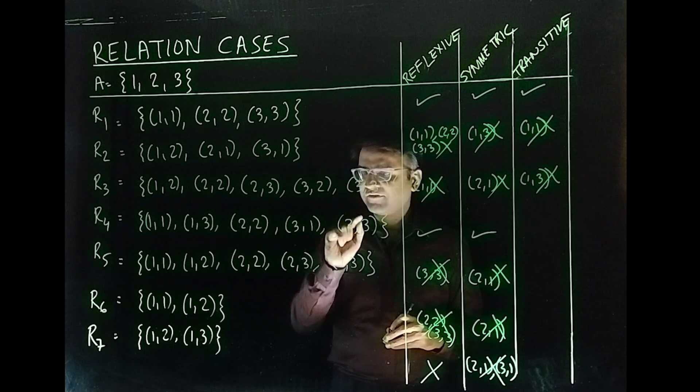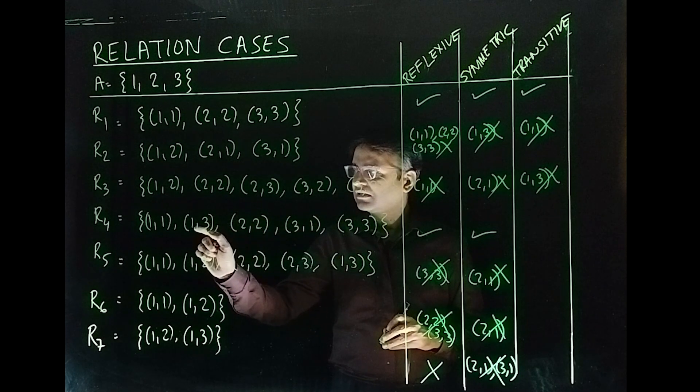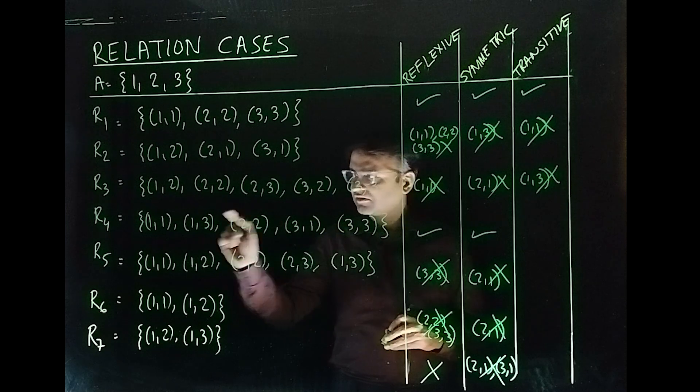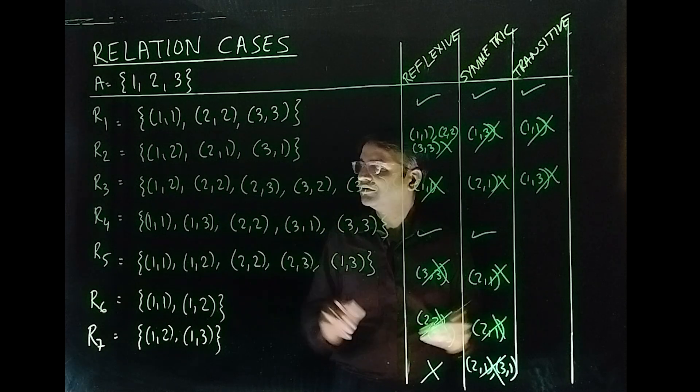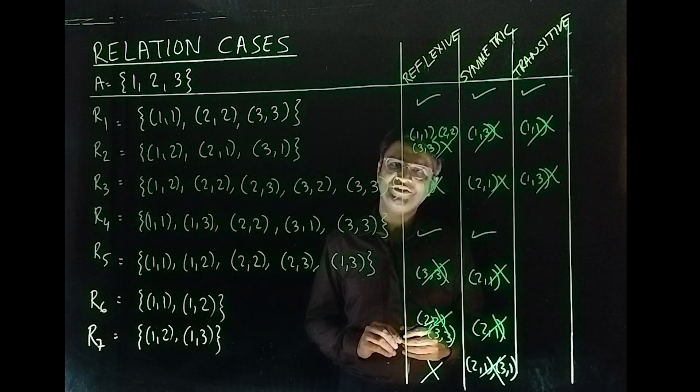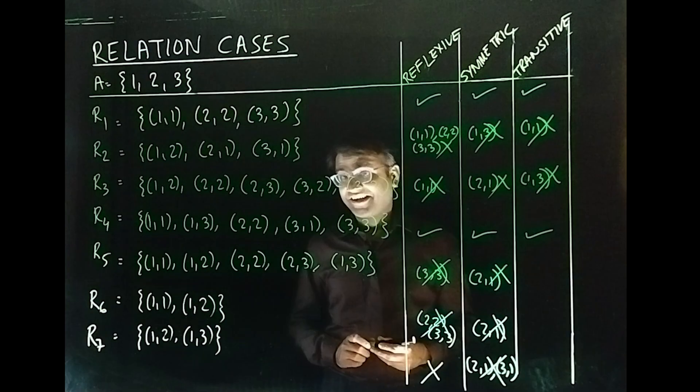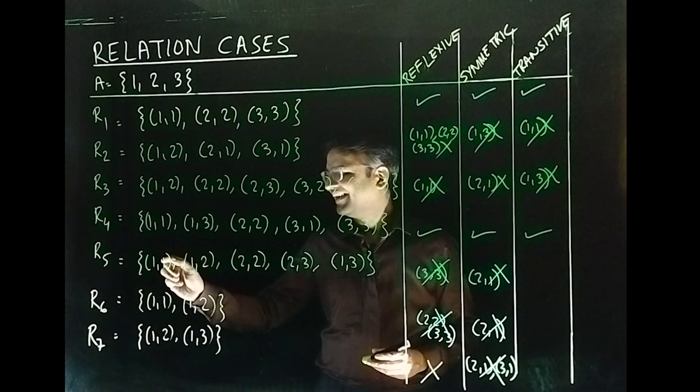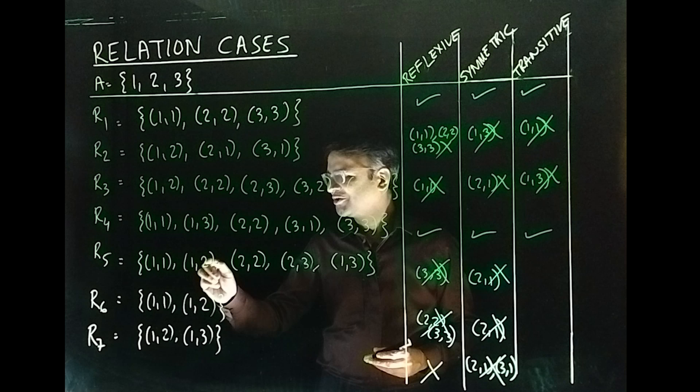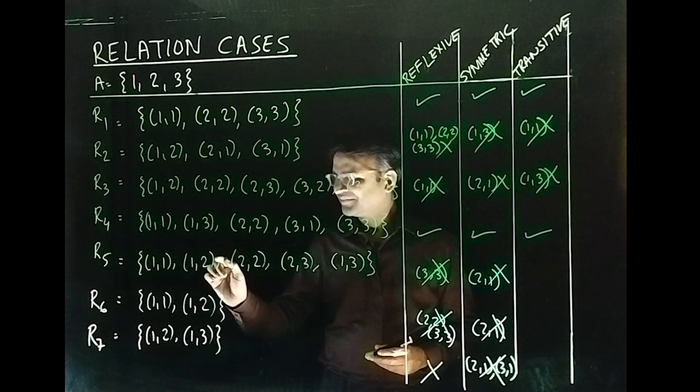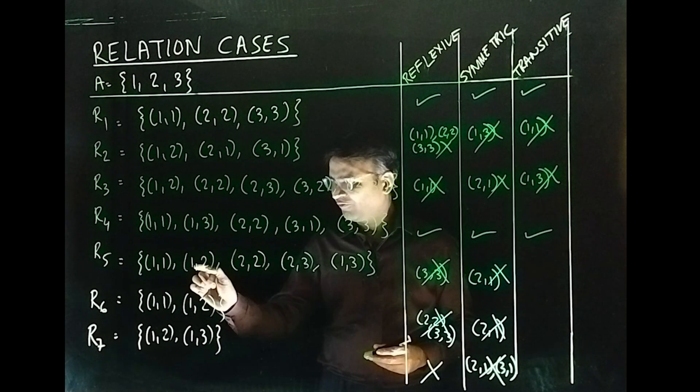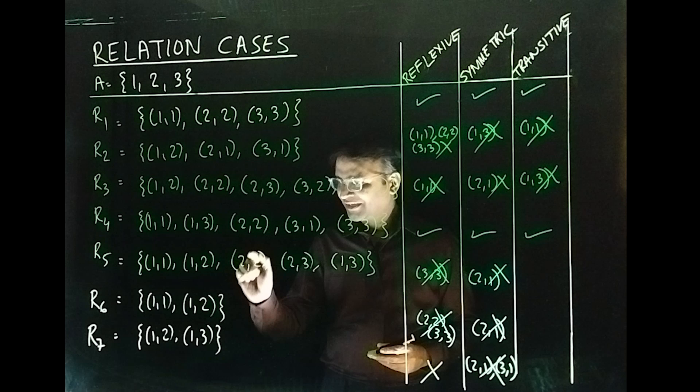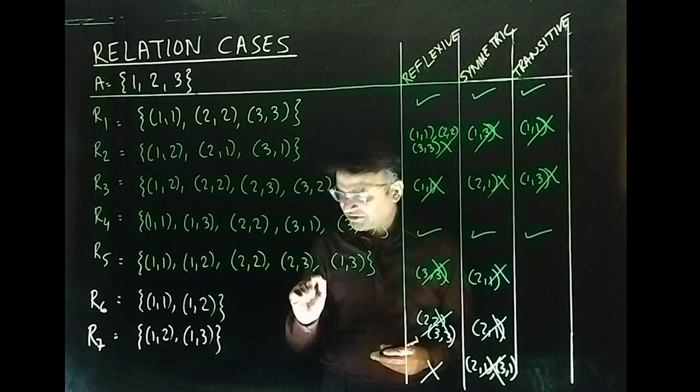R₅. (1,1), (1,2), (1,2) fine done. (1,2), (2,2), (1,2) fine done. (2,2), (2,3), (2,3) yeah we have fine.